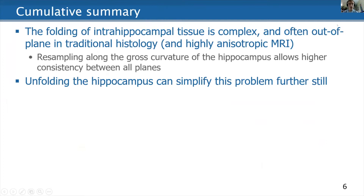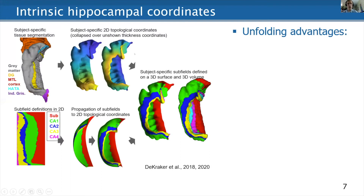I want to tell you about a second approach: basically unfolding the hippocampus to simplify this problem even further. This is an approach we previously developed in MRI. We do a tissue segmentation where we take all the hippocampal gray matter together, and then we apply a coordinate framework to all of that gray matter — shown in these two surfaces here. One goes from anterior to posterior; one goes from the neocortex on the medial side inward to the dentate gyrus on the very innermost edge. Those two gradients together make up a coordinate framework that we can use to map all the different subfields in a single plane of view.